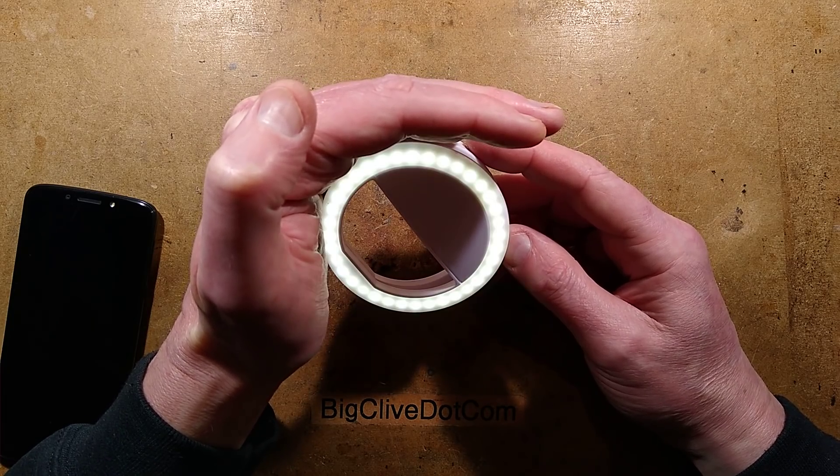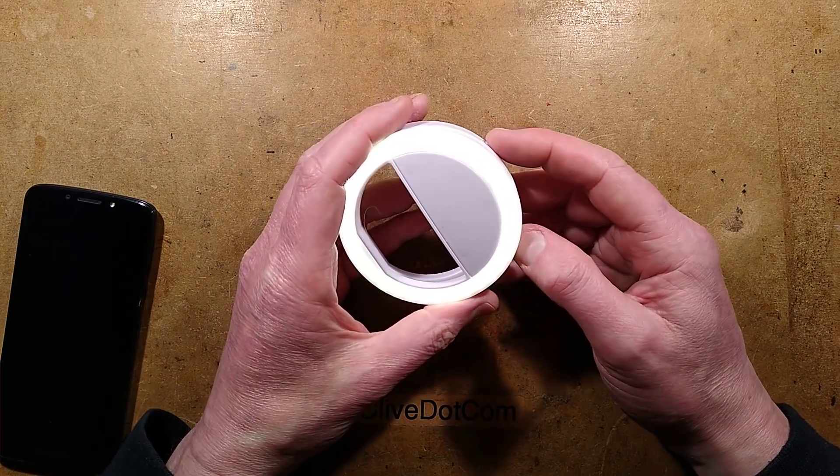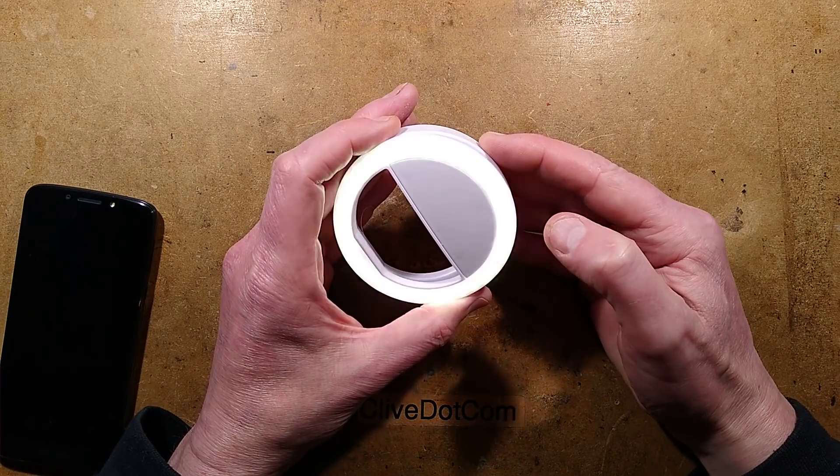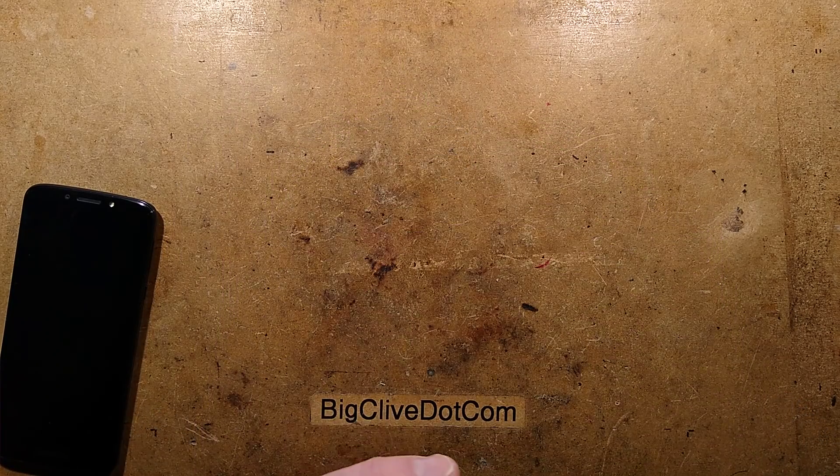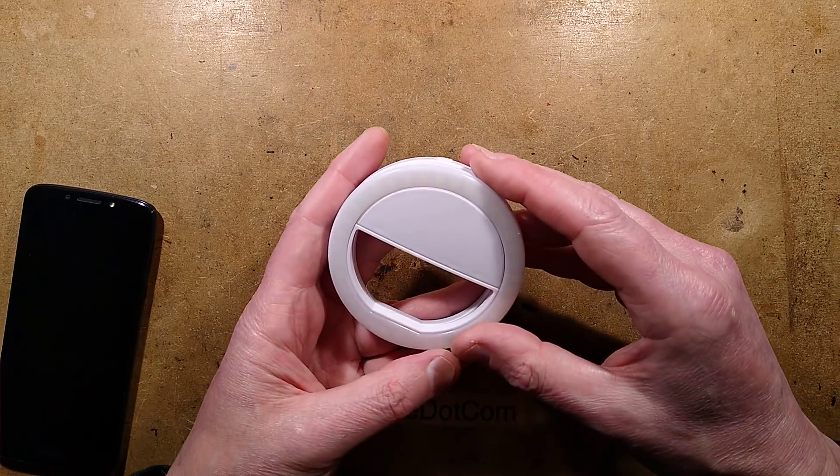High setting and then off. So low, medium and high. That's what you're getting. What happens if I hold the button in? Oh it actually goes into a strobe mode. That is just absolutely... I'm sorry I did not know it was going to do that.